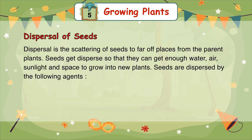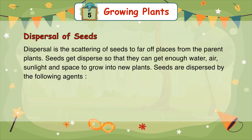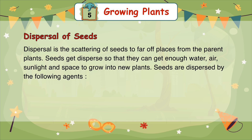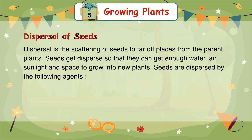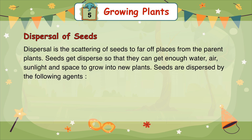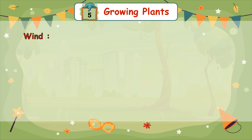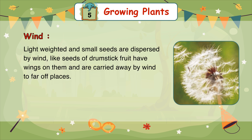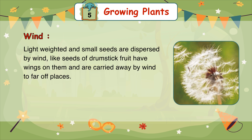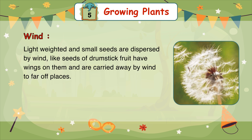Dispersal of seeds: dispersal is the scattering of seeds to far-off places from the parent plants. Seeds get dispersed so that they can get enough water, air, sunlight, and space to grow into new plants. Seeds are dispersed by the following agents. Wind: lightweight and small seeds are dispersed by wind. For example, seeds of the drumstick fruit have wings on them and are carried away by wind to far-off places.